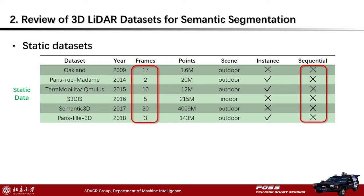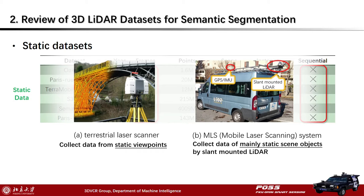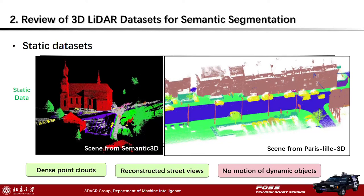Static datasets often include only a few LiDAR frames, and each frame contains very dense point clouds. Static data are usually collected from static viewpoints by terrestrial LiDAR scanners or MLS systems that capture many static scene objects for applications such as street view, 3D modeling, and virtual reality. A major feature of static datasets is dense point clouds that reconstruct large-scale street views, but the motion of dynamic objects in the scene is not captured.